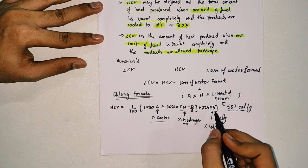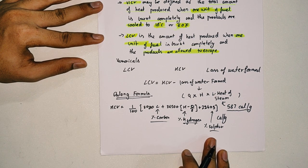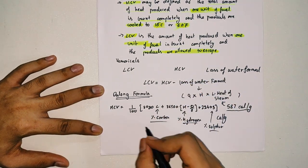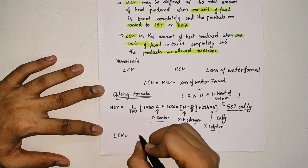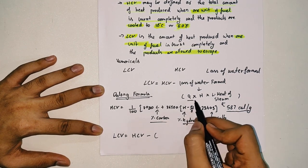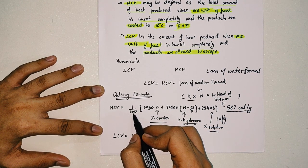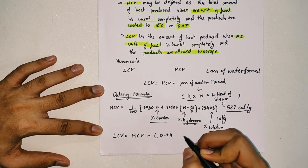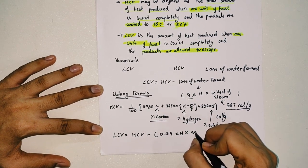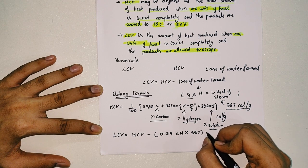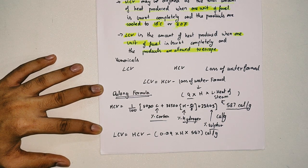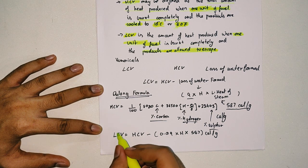Combining Dulong's formula with the loss of water formed, the final equation for LCV is: LCV = HCV − 0.09 × H × 587, where 587 is the latent heat of steam in cal/gram.